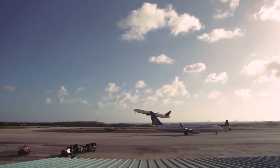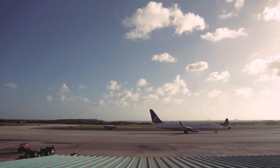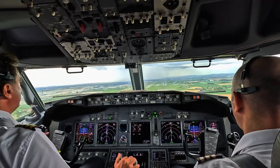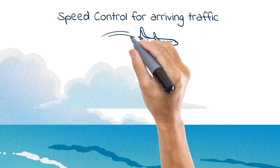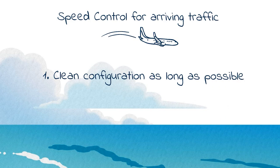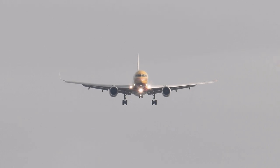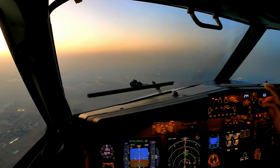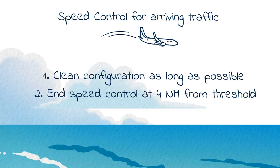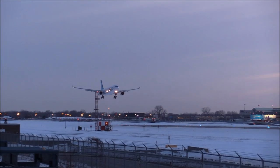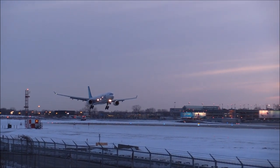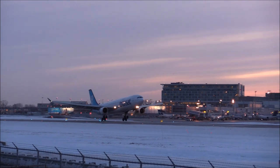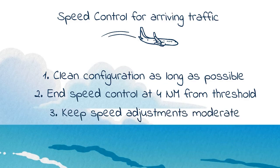Let's move on to the final and most important scenario — a must-know for all controllers when sequencing traffic inbound for final approach. First, some fundamental rules. Number one: ATC should allow traffic to fly in a clean configuration for as long as possible; however, to manage traffic flow efficiently on downwind, base leg, and final, controllers usually need to slow traffic to about 230, 210, or even 190 knots. Number two: speed control cannot be applied after the aircraft reaches four miles from the threshold — at that point the aircraft must be given the possibility to reduce to landing reference speed. Number three: speed adjustments given on intermediate and final approach should be minor, preferably at most 20 knots.